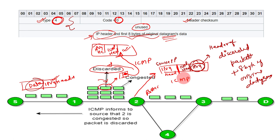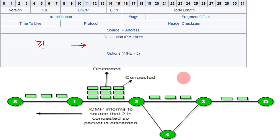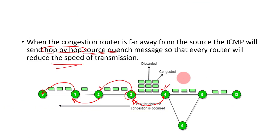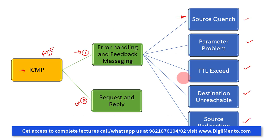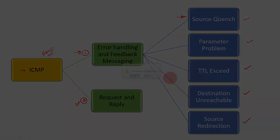Now let us take the next functionality, which is the parameter problem. We will discuss how we represent or tell the sender that there is a parameter problem using an ICMP message.